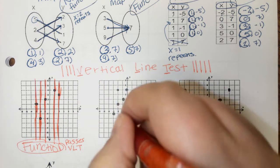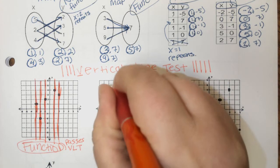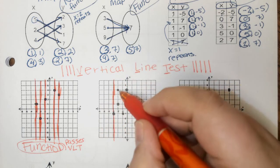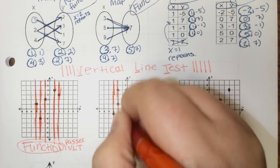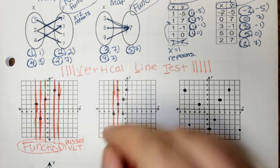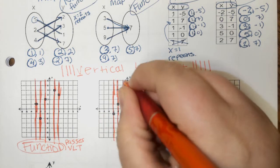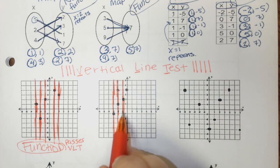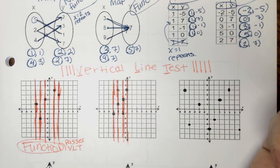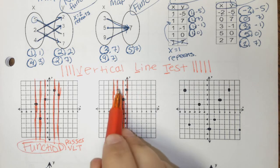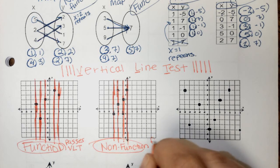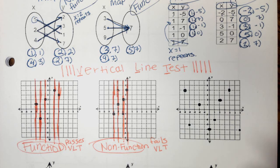Looking at the second graph of ordered pairs: I draw a vertical line through the first ordered pair — that only hits one, so it's okay. Here's another ordered pair and I draw a vertical line — this one hits more than one ordered pair, which means it fails the vertical line test. Another vertical line again hits more than one ordered pair, failing the VLT again. Even though the last ordered pair's vertical line is okay, since any of the vertical lines hit more than one dot, this is a non-function because it fails the vertical line test.